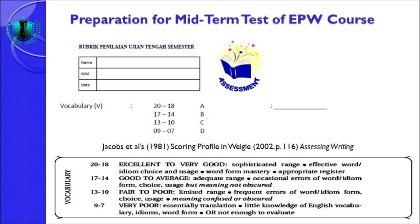Untuk nilai very poor: essentially translation — selalu saya ingatkan kepada mahasiswa, ketika anda masuk ke mata kuliah English Paragraph Writing atau nanti anda menulis skripsi, jangan menggunakan Google Translate. You have to write your English by yourself — if I can do it, why cannot you. Essentially translation berarti very poor. Little knowledge of English vocabulary, idiom, word form — nampak penulis memiliki pengetahuan yang terbatas tentang kosa kata bahasa Inggris, idiom, maupun bentuk kata. Not enough to evaluate — tidak banyak unsur yang bisa dievaluasi dari tulisan tersebut.